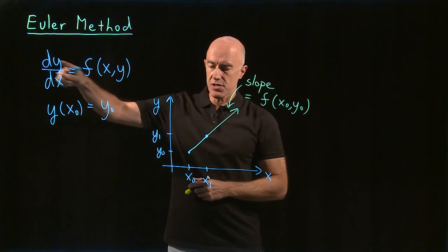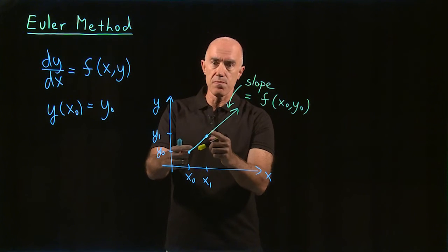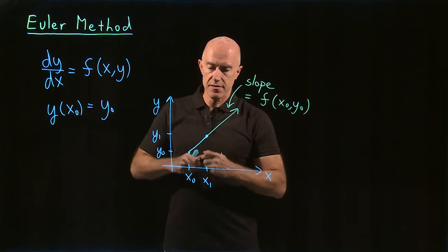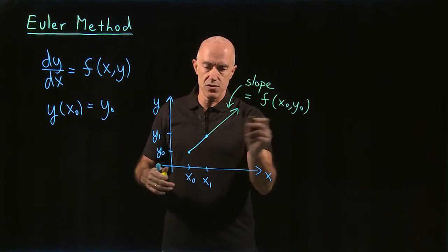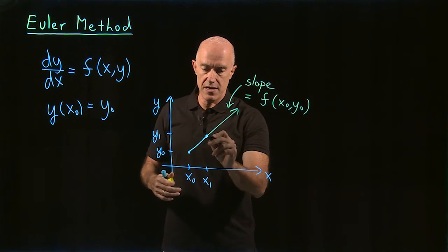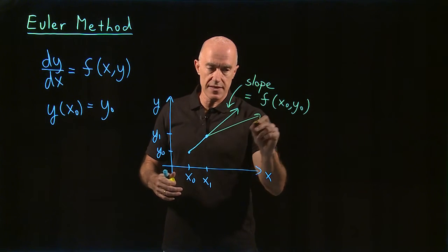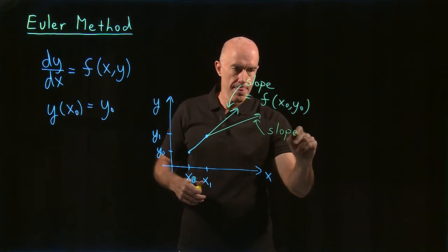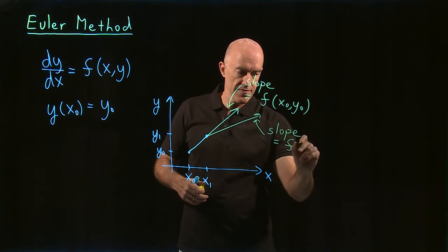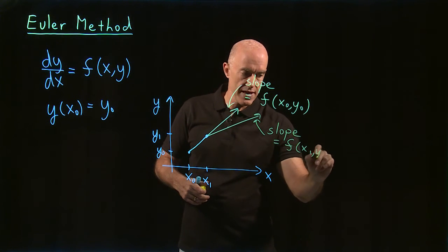So the differential equation then tells us the slope of the solution at this point. And let's say dy/dx is slowly decreasing. So the slope may look like that. So here the slope will be f of x1, y1.